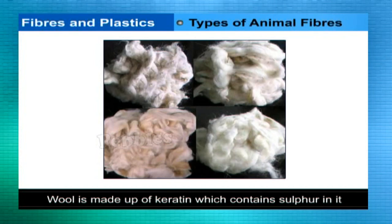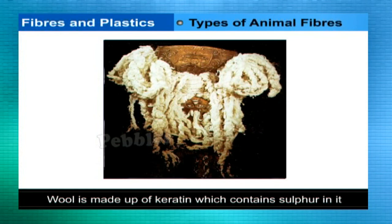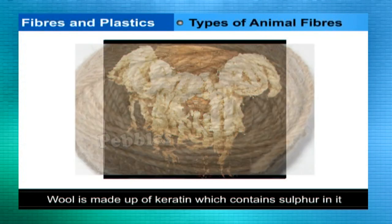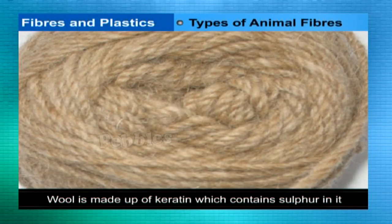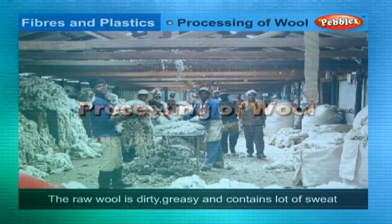Wool is collected from sheep by cutting with clippers; this process is called shearing. Angora, Pashmina, and Cashmere are the most important breeds of goat and varieties of goat wool. Camels grow a very thick coat of hair which they shed during summer.